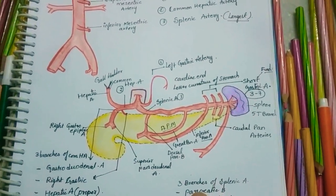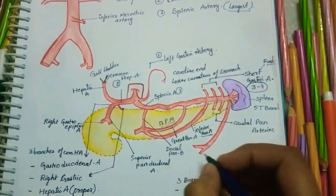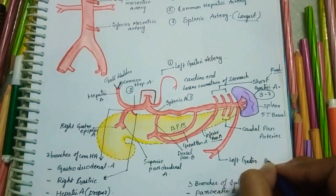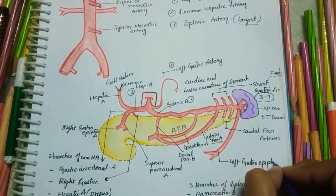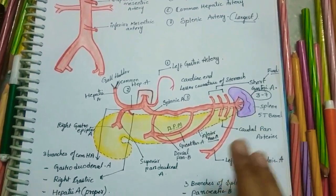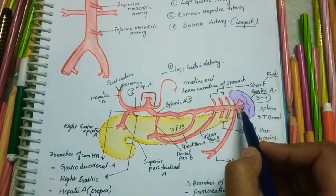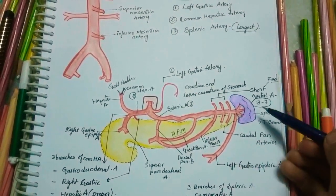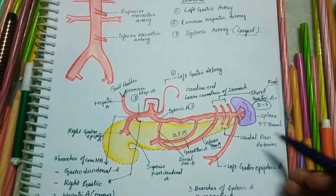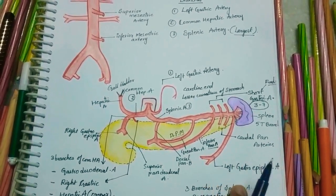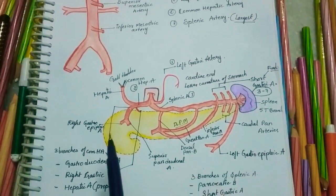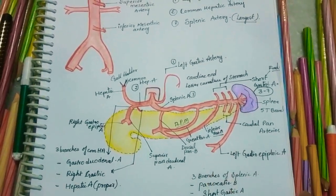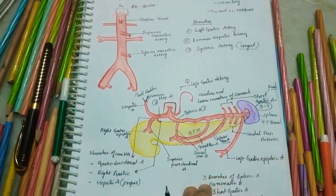The left gastroepiploic artery arises from the terminal part of the splenic artery near the hilum of the spleen. It runs along the greater curvature of the stomach and terminates by anastomosing with the right gastroepiploic artery, thus completing the celiac trunk.